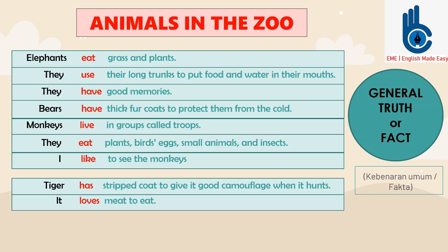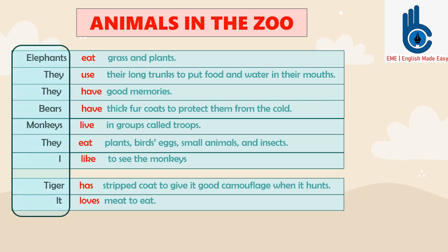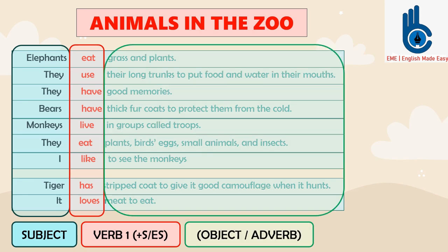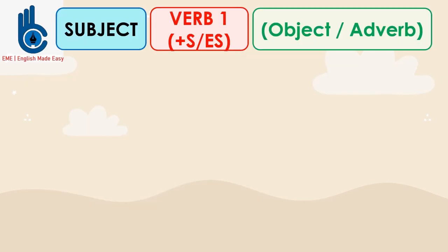All of those sentences are telling about general truth or fact. They use the same pattern. They will start with subject followed by verb. The verb here is verb one. There is also some verb that uses S or ES, plus object or adverb. This is the pattern of positive sentences in simple present tense.